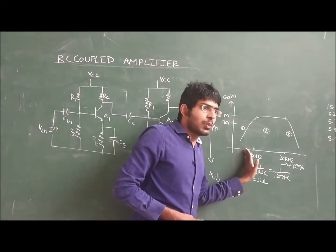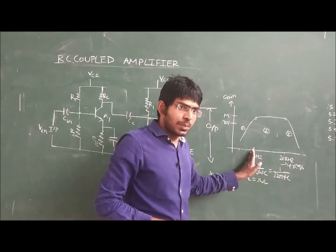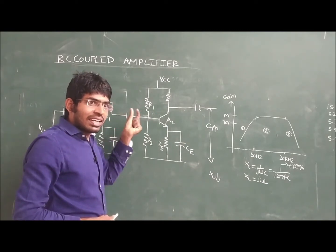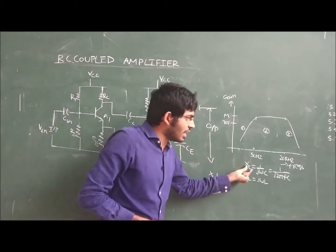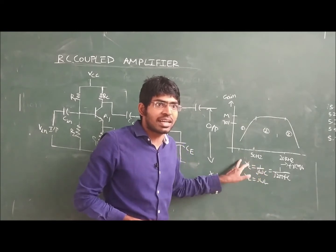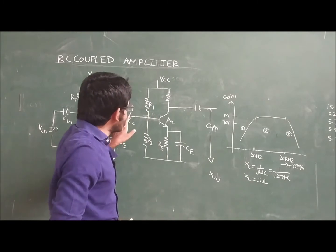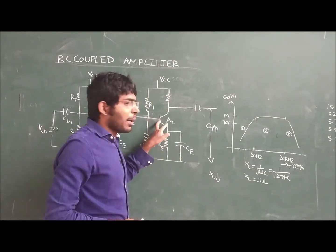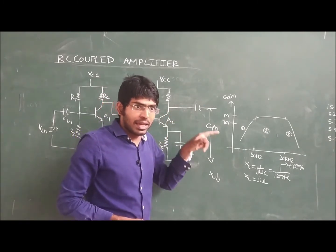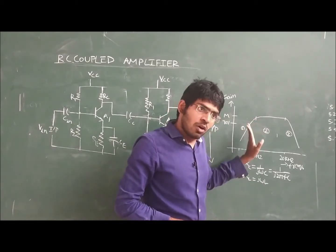When the frequency is being incremented — when we are increasing the frequency — obviously, the reactance across the capacitor will be decrementing. With the increment of frequency, the reactance is decrementing. Because there is a decrement in the reactance, more signal — more voltage — can be observed at the base of transistor T2, and there is a chance for higher gain. That is why, with the increment of frequency, the gain is also incrementing at low frequencies.